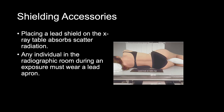There are many shielding accessories available to the radiologic technologist. Placing a lead shield on the x-ray table absorbs scatter radiation, which is used frequently when doing lumbar spines. Any individual in the radiographic room during an exposure must wear a lead apron. For example, if a parent is present with a child being x-rayed, ensure the parent has a lead apron or has them stand behind the lead window at the control panel. Because the patient is the greatest source of scatter radiation, any individual remaining in the room during an exposure must wear a lead apron and stand as far from the patient as possible, at least six feet away from the primary beam.